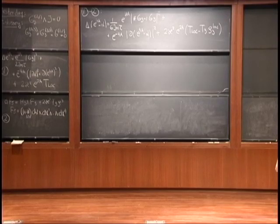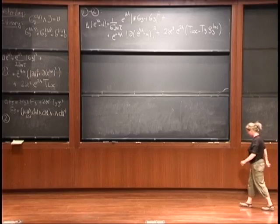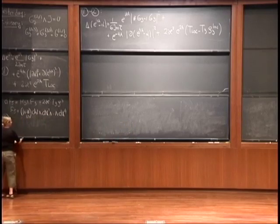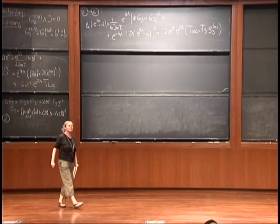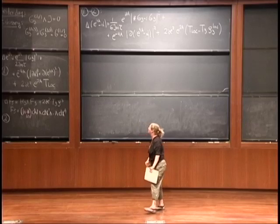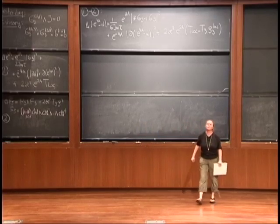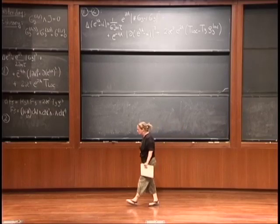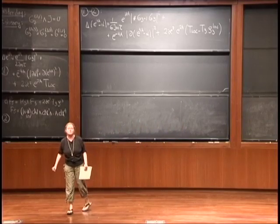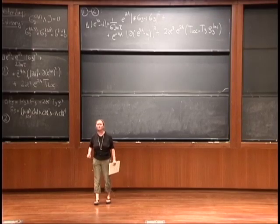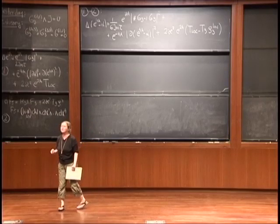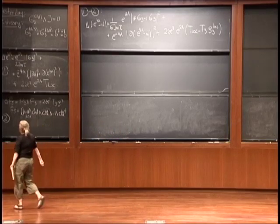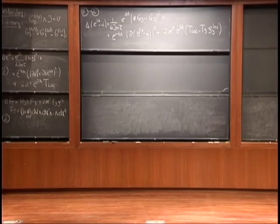Let me start today because I still want to get to KKLT. I wrote some of the equations we discussed yesterday on the board to save time. What we discussed yesterday is we derived the constraints on the three-form flux in the Type IIB theory, starting with F-theory, using the supersymmetry constraints derived for M-theory on four-folds. The only non-vanishing component is the (2,1) component, which has to be primitive.